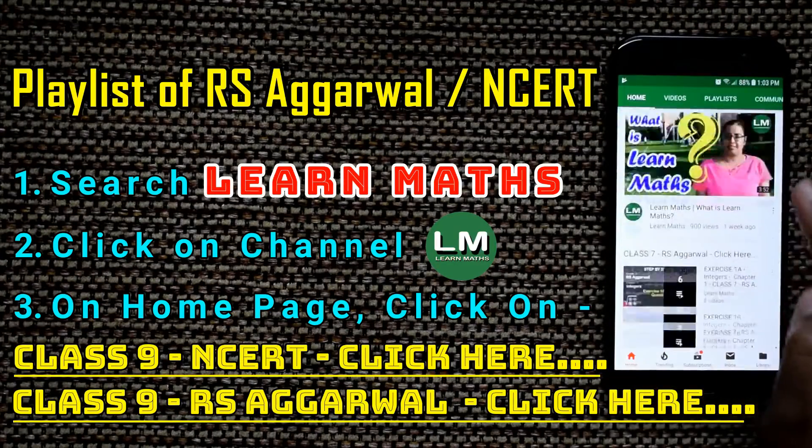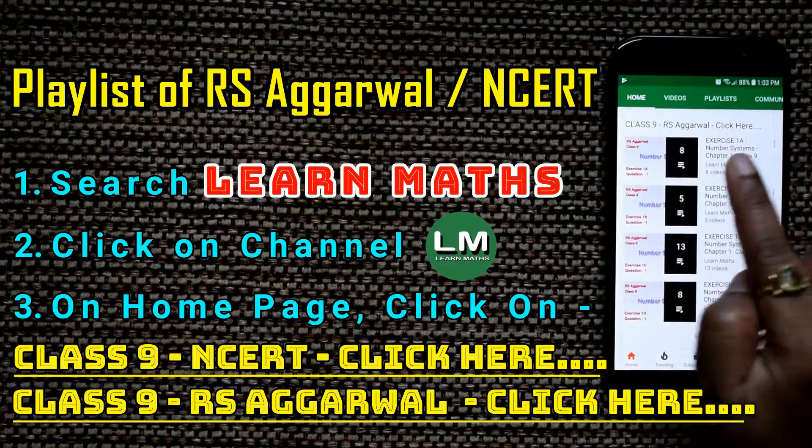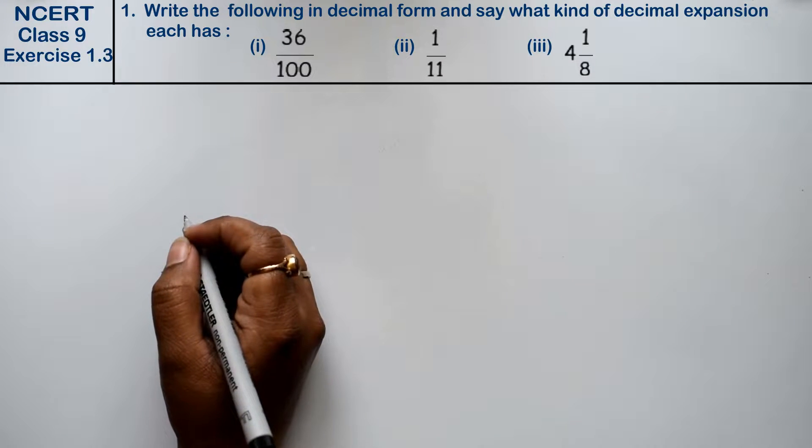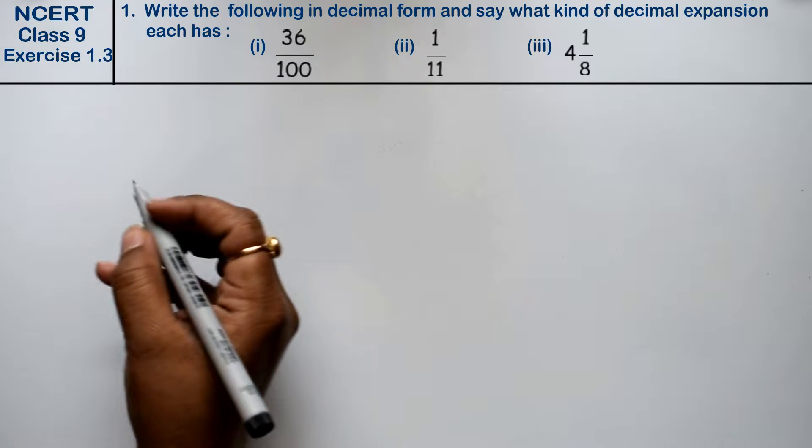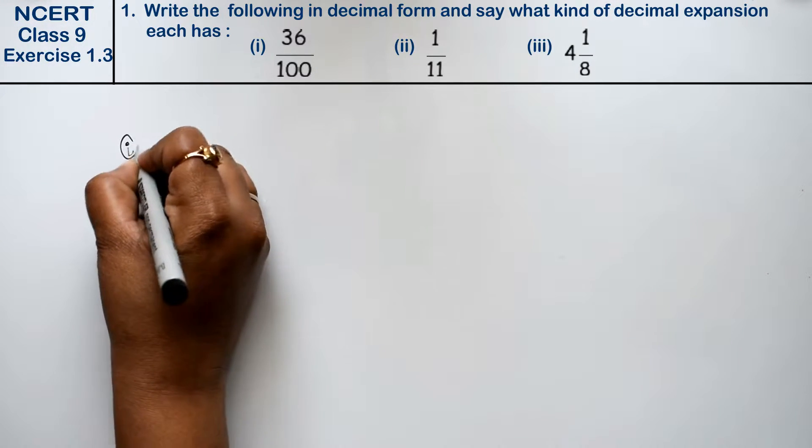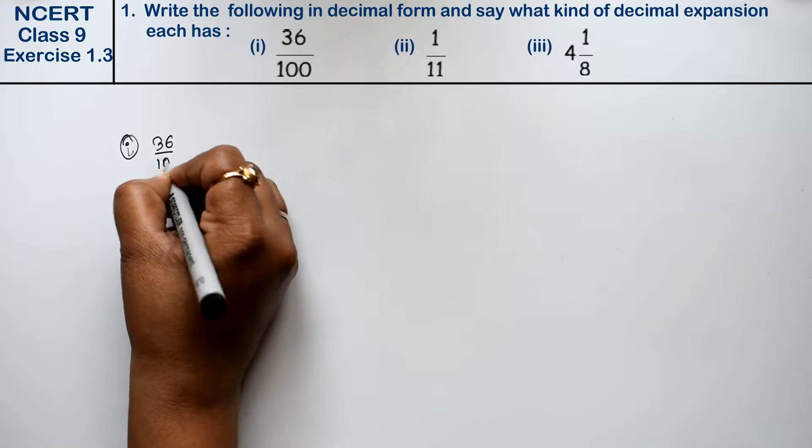Let's do question number first of exercise 1.3, that is number system. Question number first is write the following in a decimal form and state what kind of decimal expansions it has. First part is 36 upon 100.